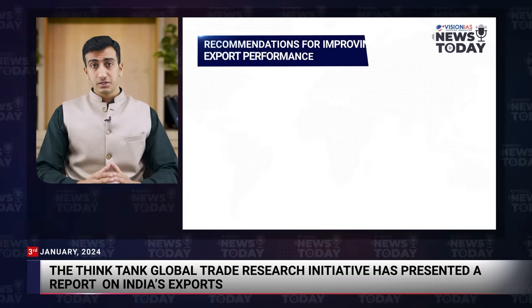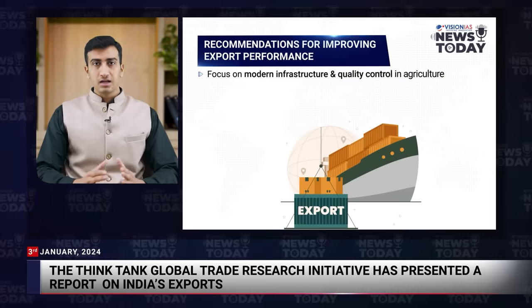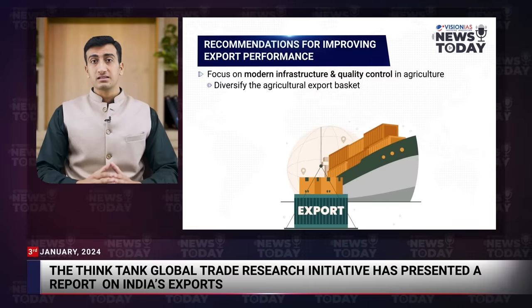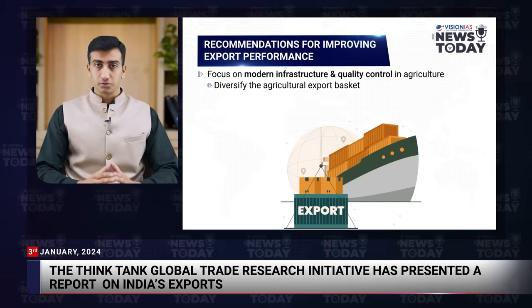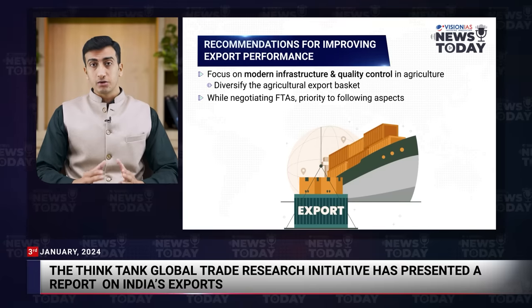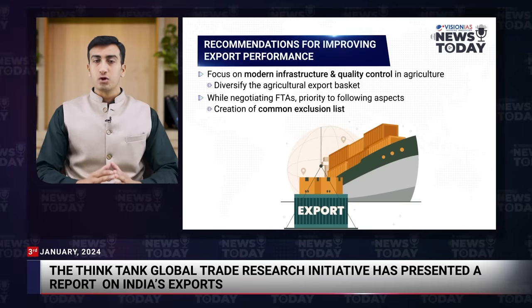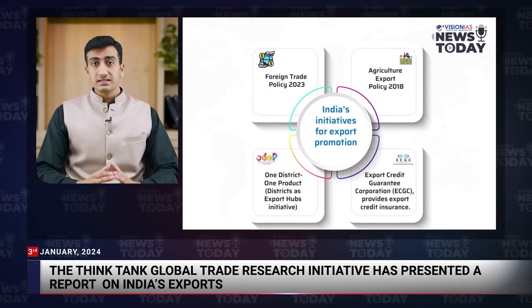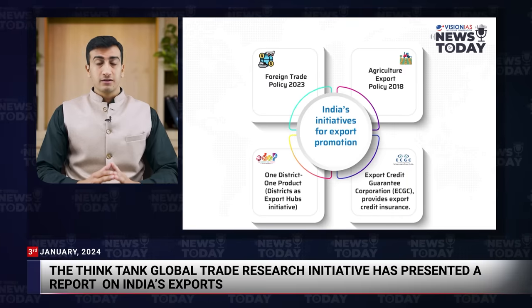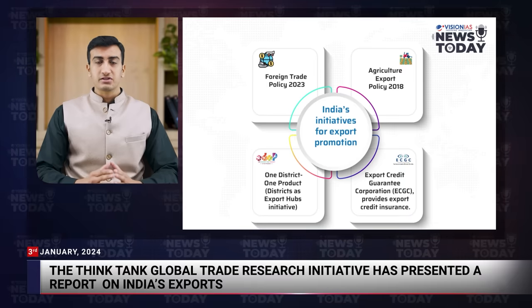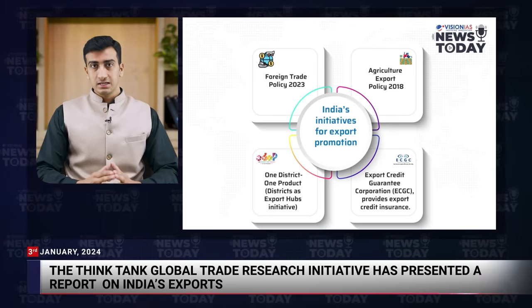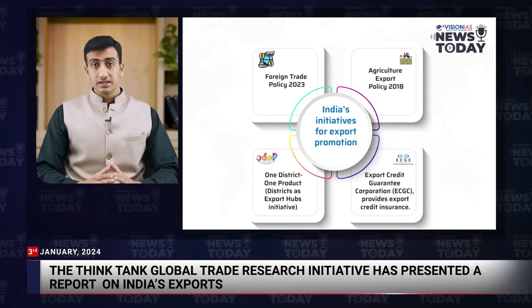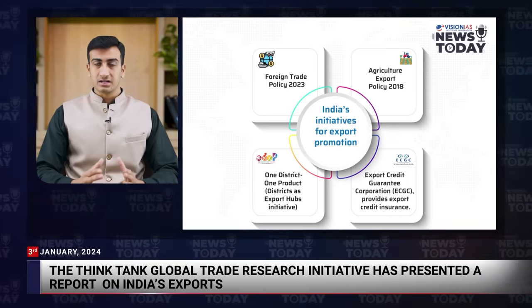Recommendations for improving export performance include prioritizing modern infrastructure and quality control in the agricultural sector, and diversifying the agricultural export basket. In negotiating FTAs, priority should be given to creation of common exclusion lists and establishing sectoral agreements. India's initiatives for export promotion include the Foreign Trade Policy 2023, Agriculture Export Policy of 2018, One District One Product or Districts as Export Hubs initiatives, and the Export Credit Guarantee Corporation, which provides export credit insurance.